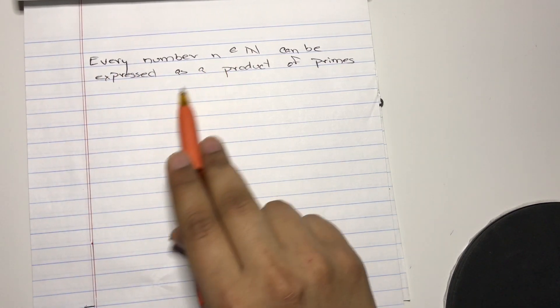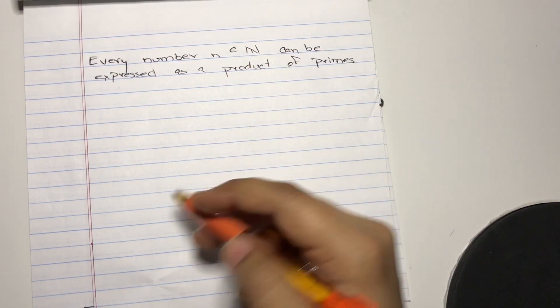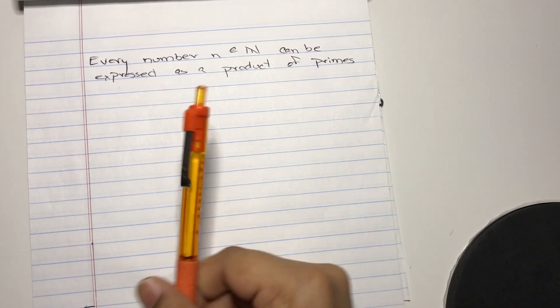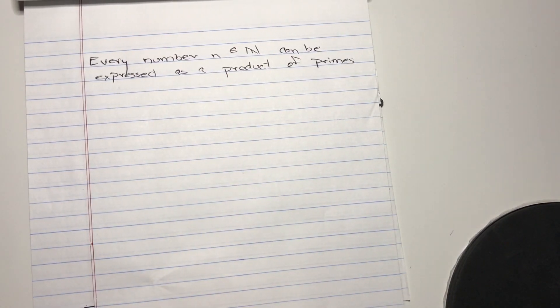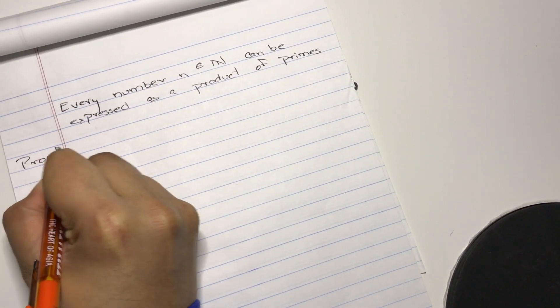Every number n can be expressed as a product of primes. Now this sounds trivial, but everything in math has to be scrutinized and proved. Then and only then will it be accepted. Even though this seems like common sense, you still have to prove it. So let's start the proof.